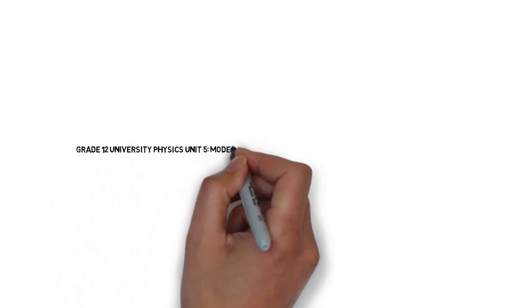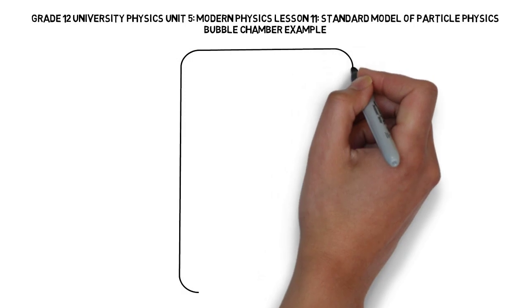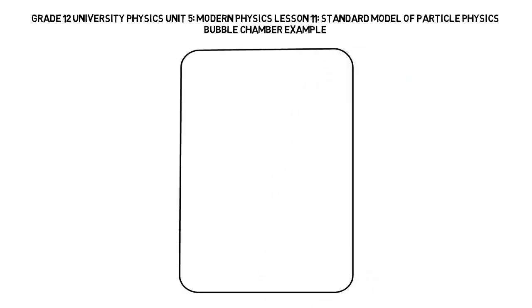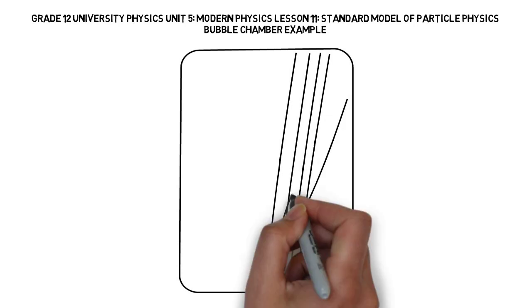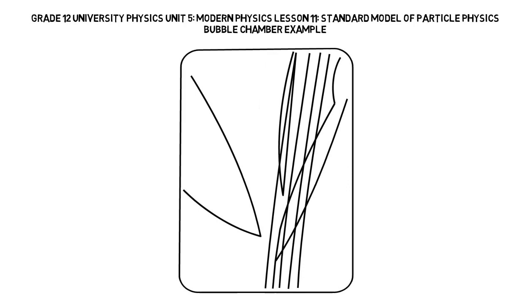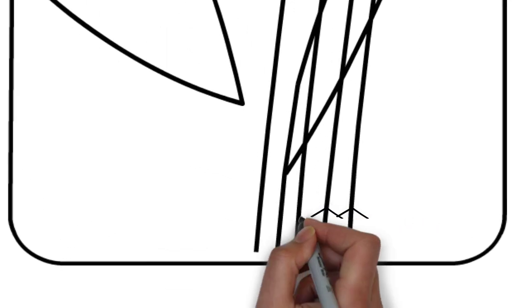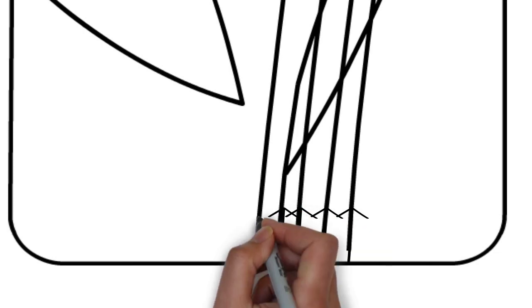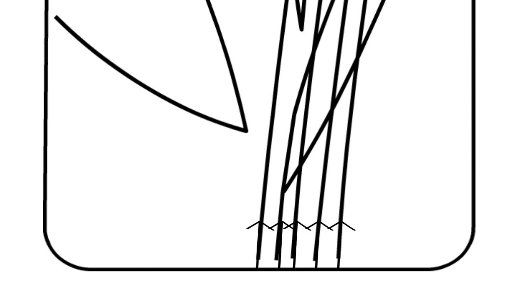This is grade 12 university physics, unit 5 modern physics, lesson 11: the standard model of particle physics — bubble chamber example. We have a bubble chamber which is a proton soup with lots of protons not moving very much, and then we fire a bunch of kaons into it. As they move through the bubble chamber, they are being slightly curved to the right.